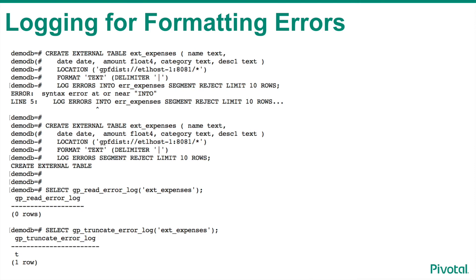In this example, the create external table retains the 4.3 feature of a user-defined external error log table. This feature is no longer supported. Use the log errors clause to record data load errors into the internal table format still available in Greenplum. Then use the GP read error log and GP truncate error log functions to review and maintain the record entries in the associated internal error table.